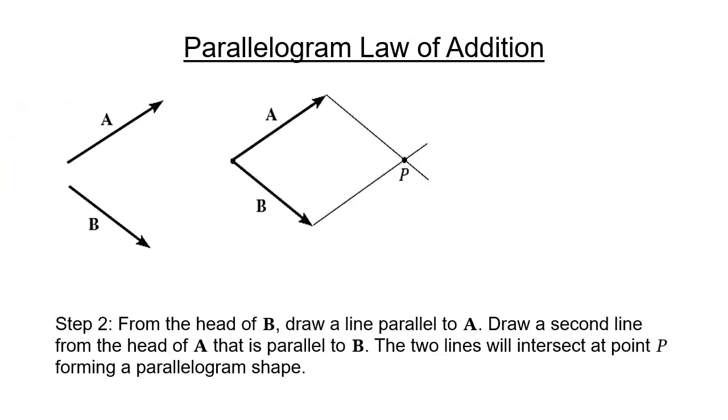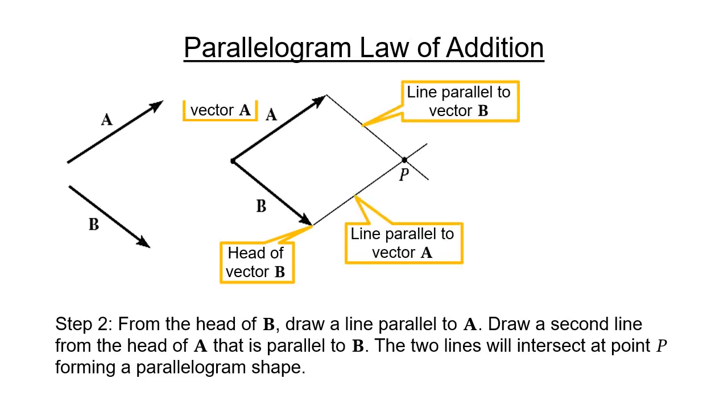Step 2: From the head of vector B, draw a line parallel to vector A. Draw a second line from the head of vector A that is parallel to vector B. The two lines will intersect at point P, forming a parallelogram shape as shown.